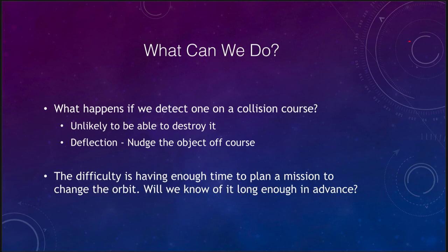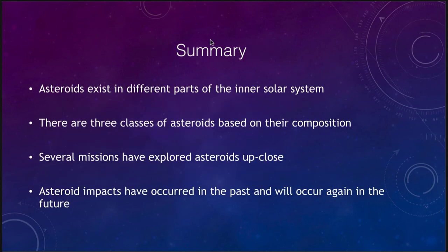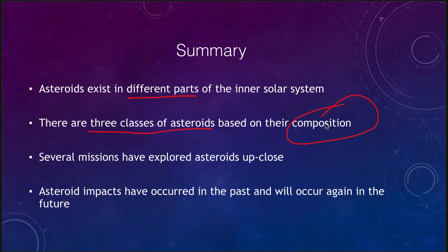In summary, asteroids exist in different parts of the inner solar system. We saw three classes of asteroids — C, M, and S type — based on their compositions. We looked at several missions that have studied asteroids up close, giving us our first good close-up images in the last few decades. And we talked about asteroid impacts, which have occurred in the past and will occur in the future, with a few things we can do to minimize their effects. That concludes our lecture on the asteroids. We'll be back next time for another topic in astronomy — have a great day, everyone, and I will see you in class.